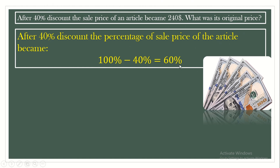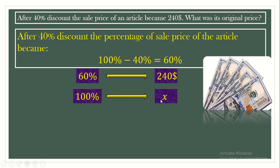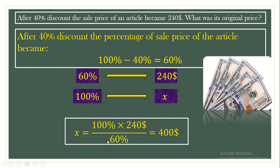So the percentage of the sale price is 60%. Since we have the sale price, we need its percentage to find the original price. We can say that $240 represents 60%. The original price represents 100%, so we call it X. X equals 100% times $240, all divided by 60%. Simplifying, we get X equals $400.